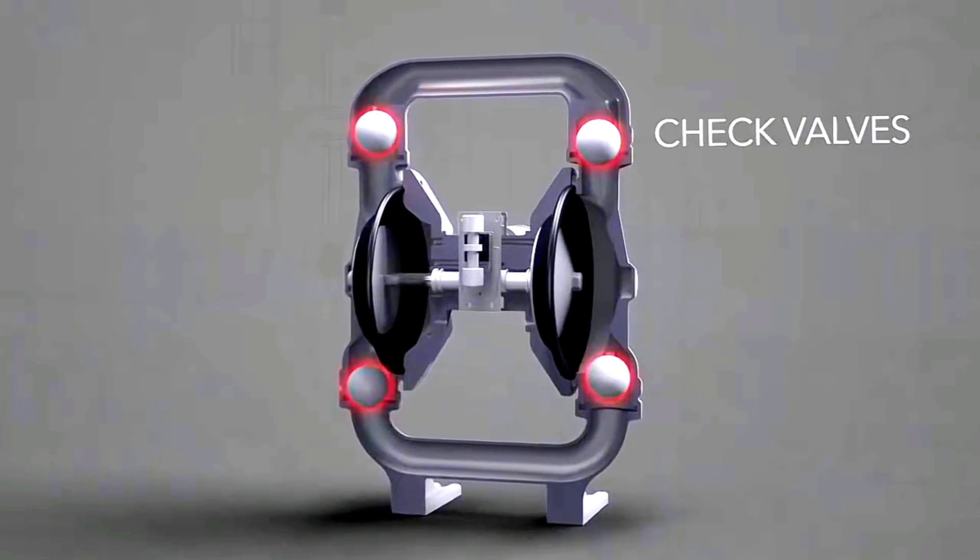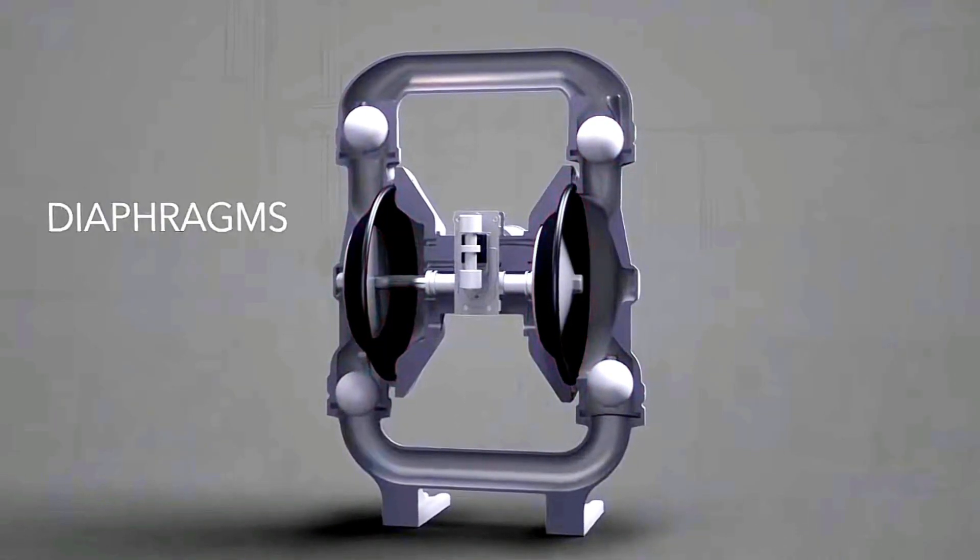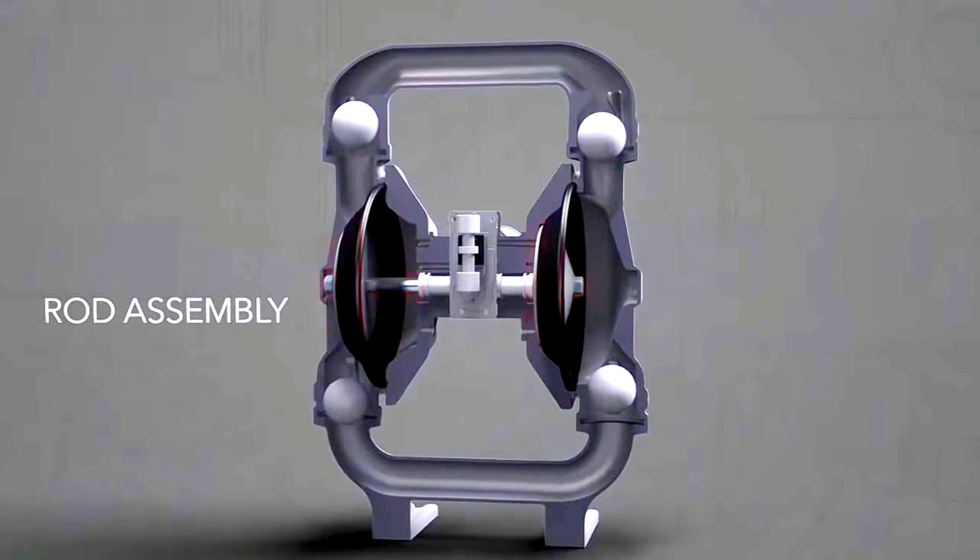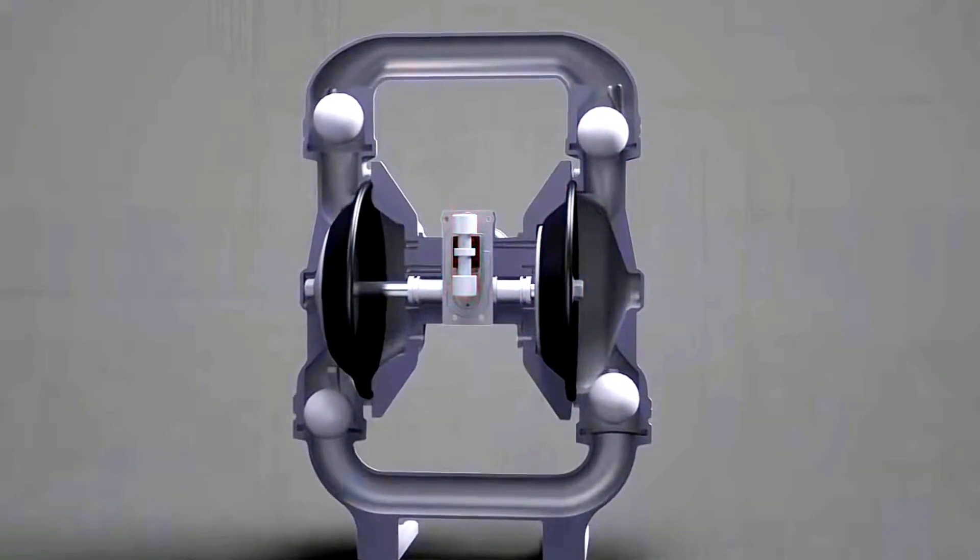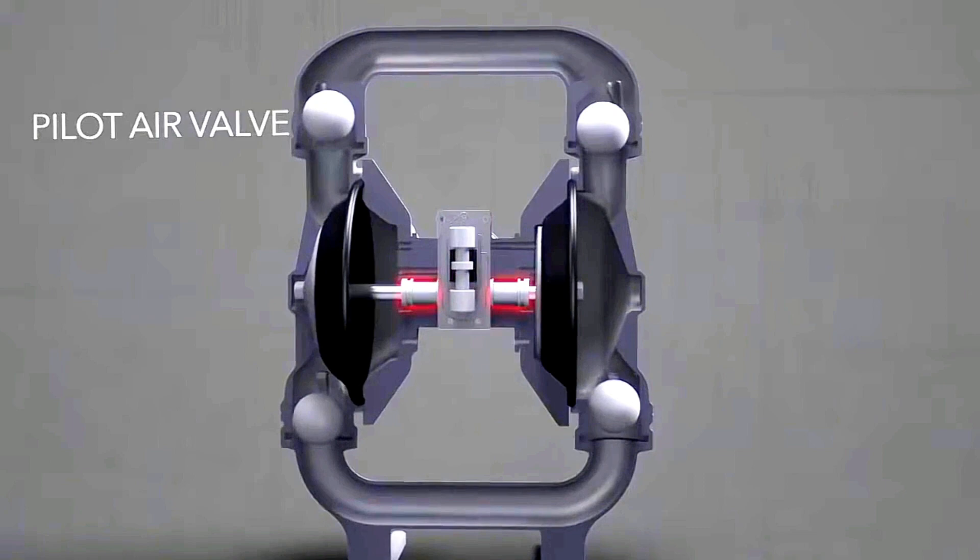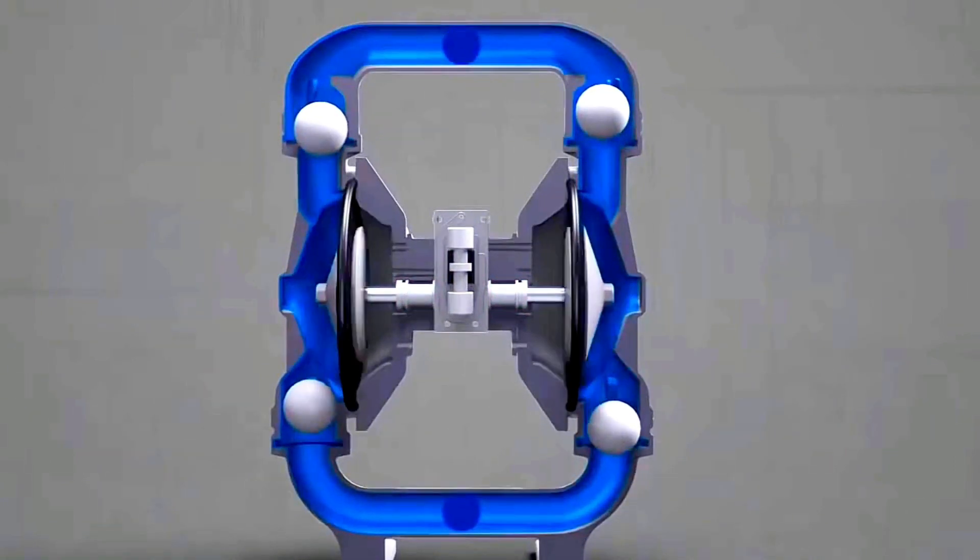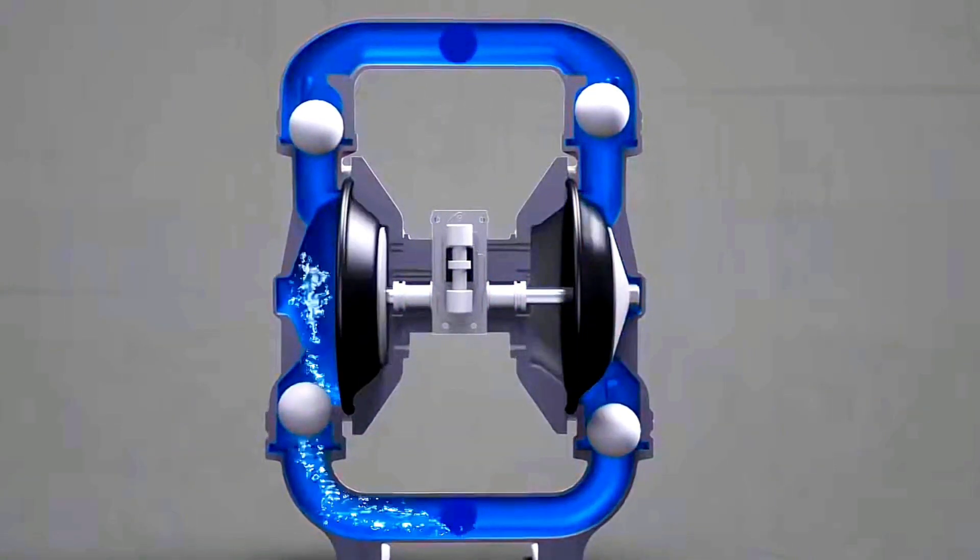Check valves, diaphragms, the diaphragm rod assembly, the main air valve, and the pilot air valve. Now that you know the key components of the A200, we can discuss how it works.